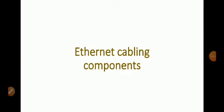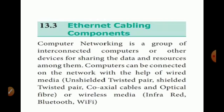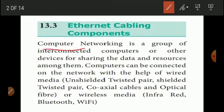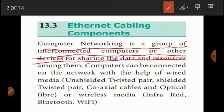Next topic: Ethernet cabling components. Computer networking is a group of interconnected computers or other devices for sharing data and resources. This is an Ethernet cabling components overview — computer networking is a group of interconnected computers and other devices for sharing data and resources.